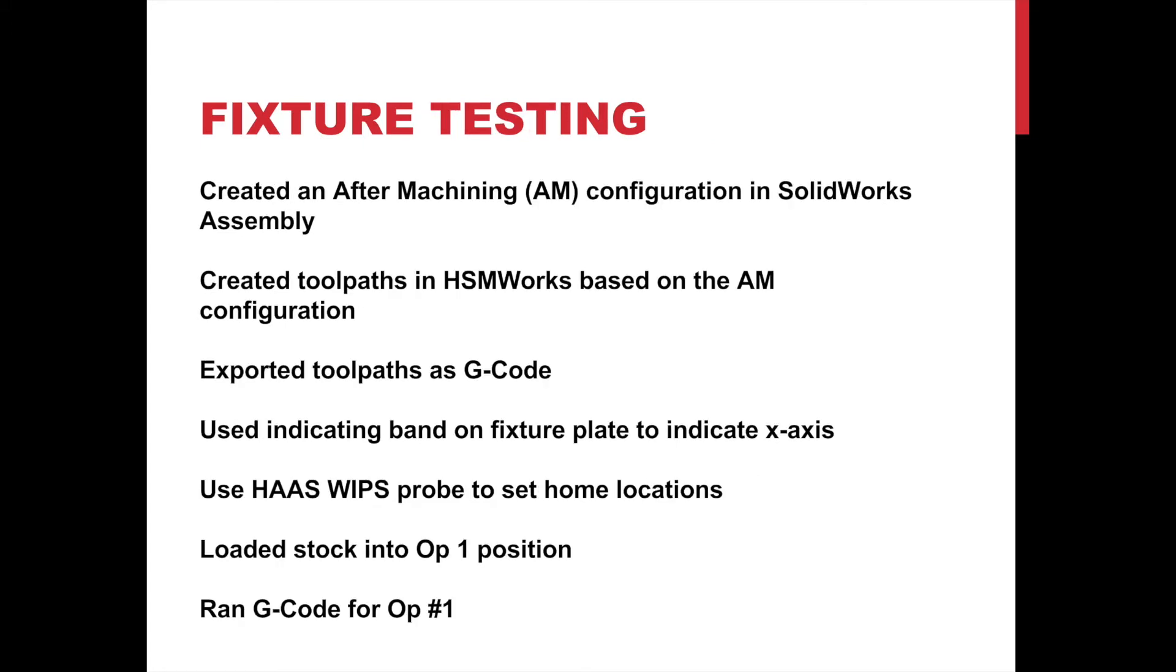Fixture testing. First, we created an after machining configuration in the SolidWorks assembly. We then created toolpaths in HSMWorks based on the AAM configuration. These toolpaths were exported as G-code. The indicating band on the fixture plate was used to indicate the X-axis. The Haas Wips probe was then used to set the home locations for Op1 and Op2. Stock was then loaded into the Op1 position and G-code was run for Op1. The same was done for Op2.